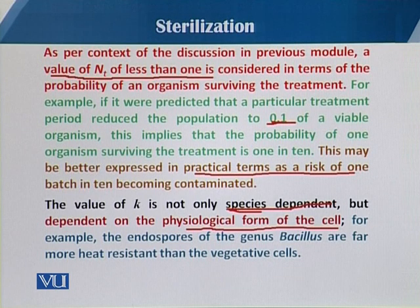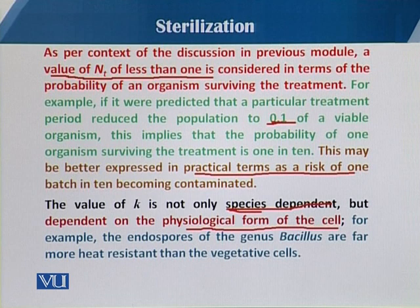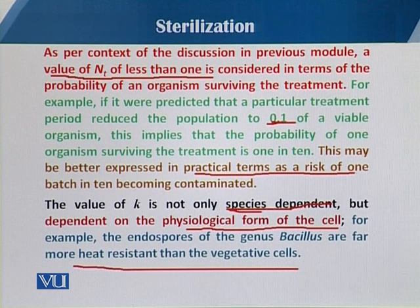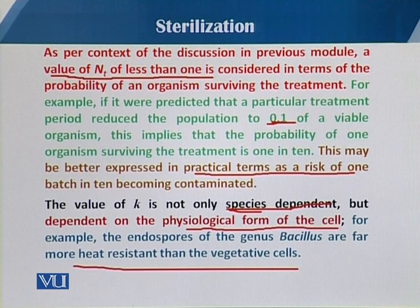For example, the endospores of the genus Bacillus are more heat resistant than the vegetative cells. So if there is a presence of vegetative cells in the fermentation medium, there will be one kind of sterilization kinetics. But in the case of endospore-forming cells, the nature of the sterilization kinetics is different.